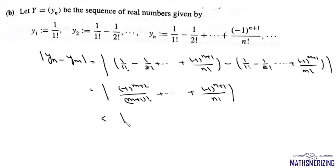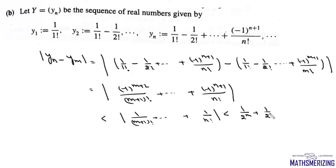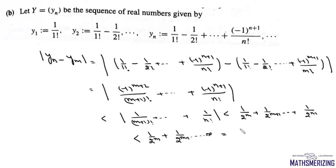This is less than 1 upon factorial n, and further less than 1 upon 2^m plus 1 upon 2^(m+1), up to 1 upon 2^(n-1). Extending to infinity, this is a geometric series a upon (1 minus r), which gives 1 upon 2^(m-1).